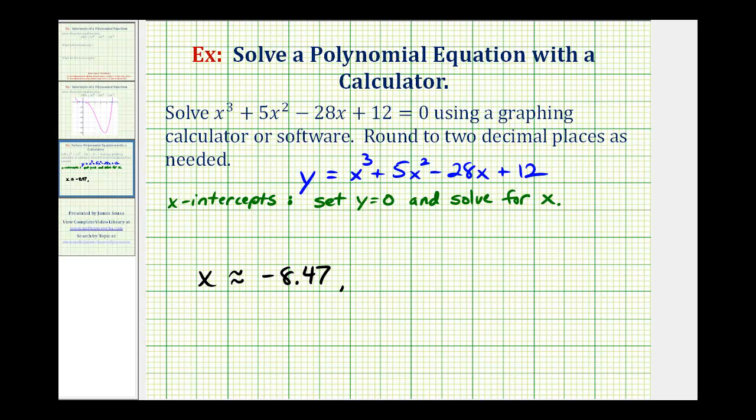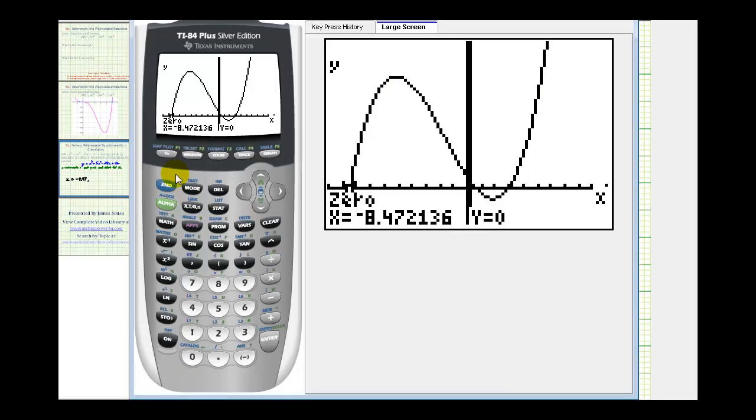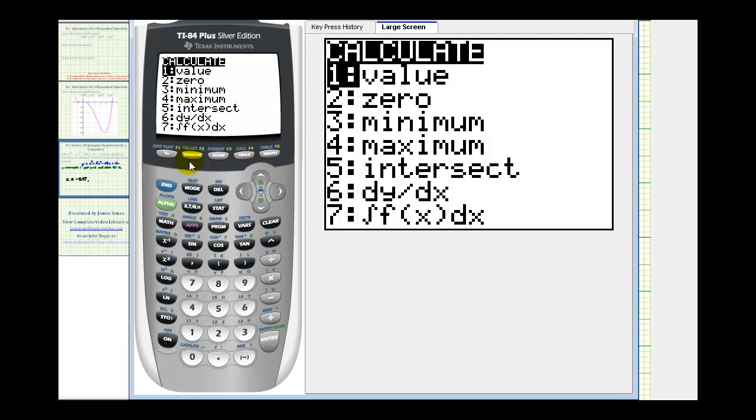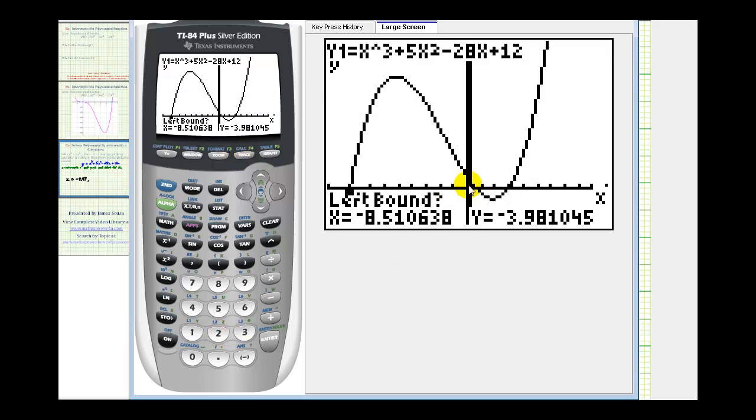And now we'll find the next x-intercept. So again, we're going to press second trace for the calculation menu, option two. And now we're going to find this intercept here. So for the left bound, this time we'll be above the x-axis somewhere near this intercept.